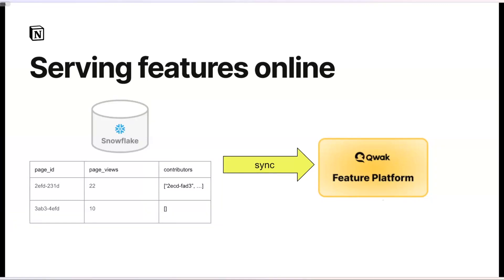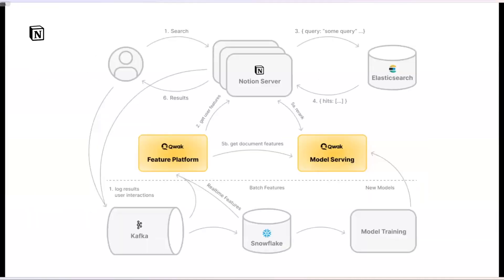There are often a lot of other data sources useful for the model that aren't directly from the search results, and we need to compute and serve these in our online systems. Qwak makes this really easy — we can just set up a sync from Snowflake or any other data source to be uploaded into Qwak. All we need to do is specify some configurations, and within less than an hour the features are available online to be queried and used in our ranking models.